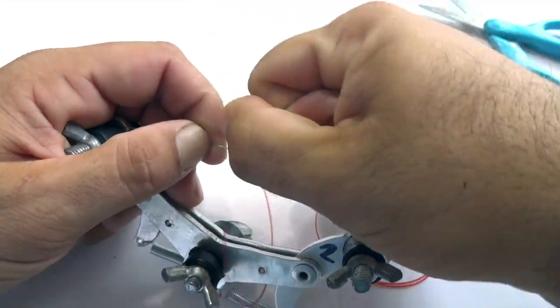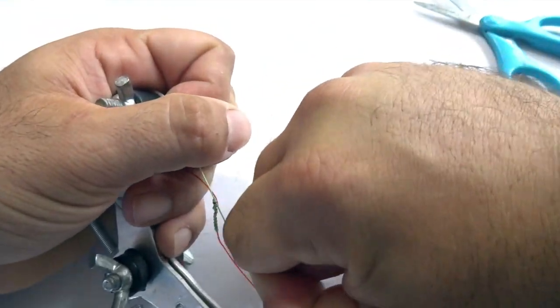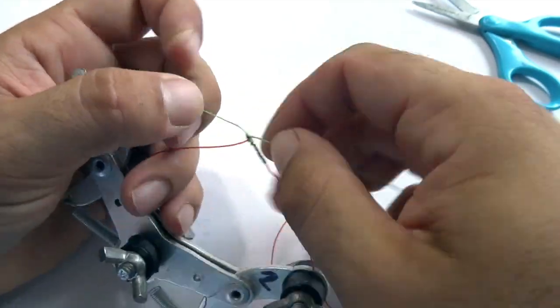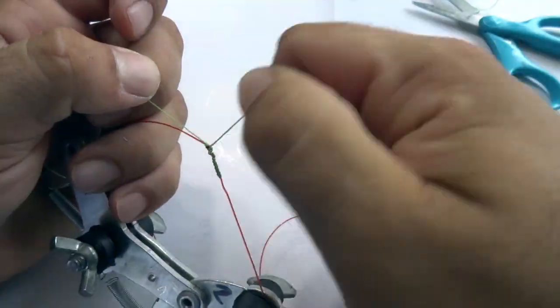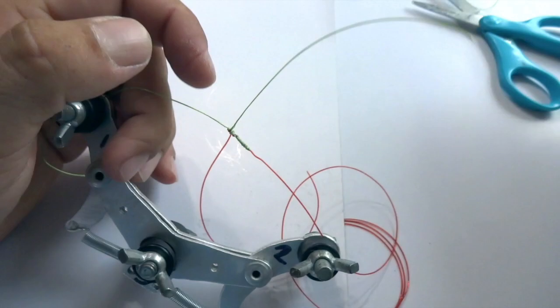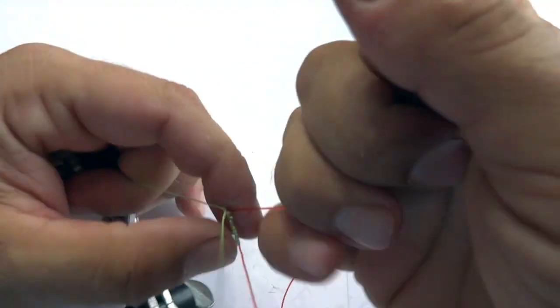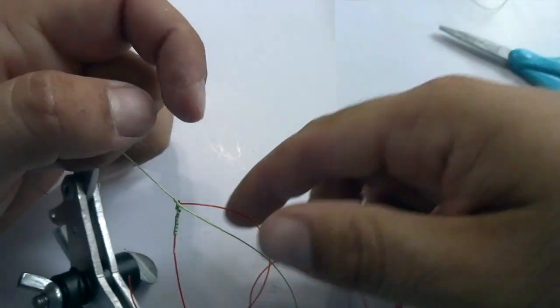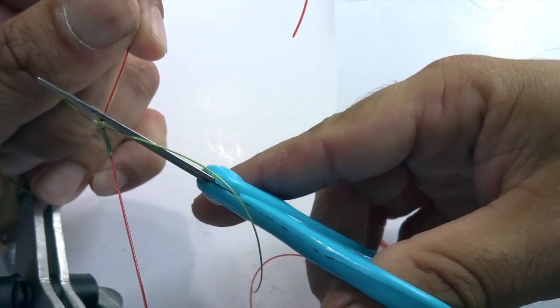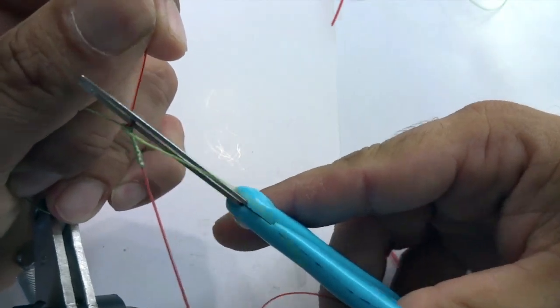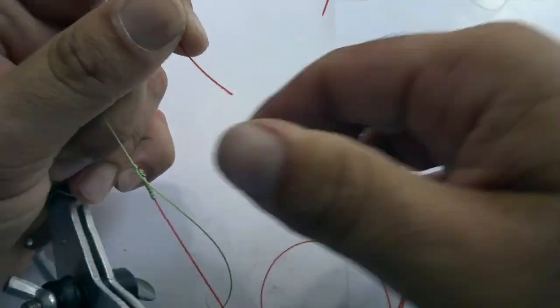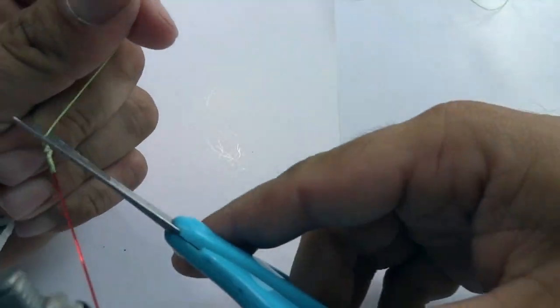You're going to go ahead and just cut off the tag ends. Now you can cut your tag ends as close to the knot as you possibly can. And after you get those tag ends cut, you can take it out of the jig, give it a pull, make sure it's not going to slip on you and pop for some reason, and you're good to go.